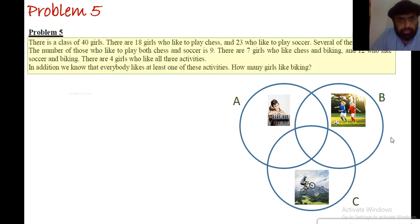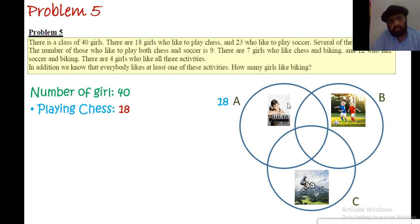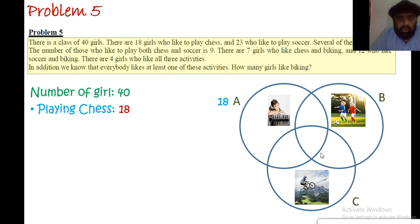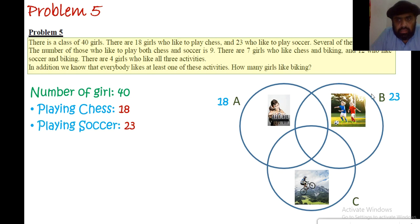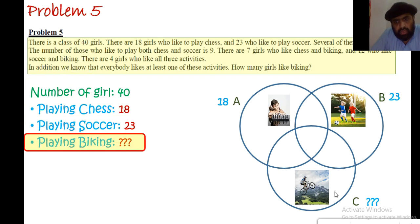Let's list all the information we've been given. There are 40 girls total — if I represent the whole data with a Venn diagram, all the data in these three circles is 40. In circle A are those girls who like chess — 18 girls. In circle B are those who like soccer — 23 girls. In circle C are those who like biking, and we don't know this number. We're also given some intersections.